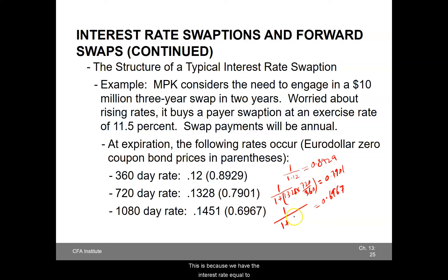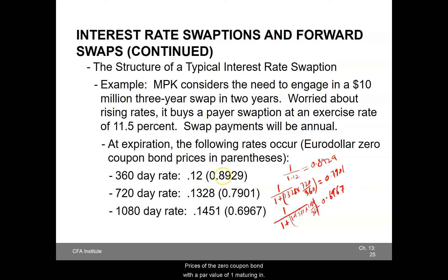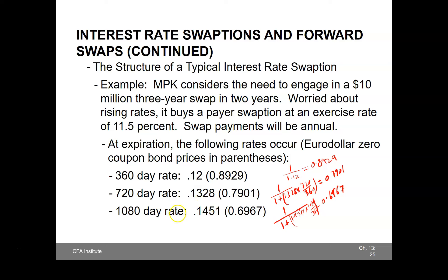A zero coupon bond maturing in 3 years time has a market value of 0.6967, because we have the interest rate equal to 14.51% multiplied into 1080 divided by 360. So this is how we have got the prices of the zero coupon bond with a par value of 1 maturing in 360 days, maturing in 720 days, and maturing in 1080 days.